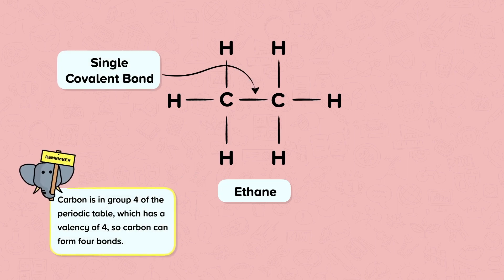Remember, carbon is in group 4 of the periodic table, which has a valency of 4, so carbon can form 4 bonds.